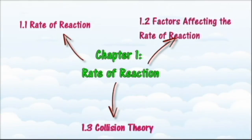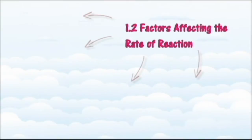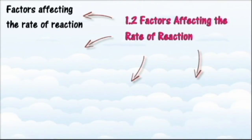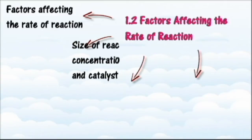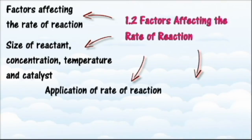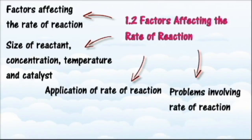In section 1.2 we will learn the factors that influence the rate of reaction. At the end of this section you should be able to design experiments to investigate factors affecting the rate of reaction, give examples of reactions that are affected by size of reactant, concentration, temperature, and catalyst, explain how each factor affects the rate of reaction, describe how factors affecting the rate of reaction are applied in daily life and in industrial processes, and solve problems involving factors affecting rate of reaction.